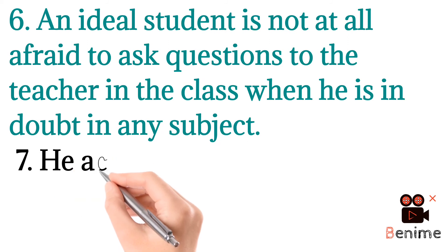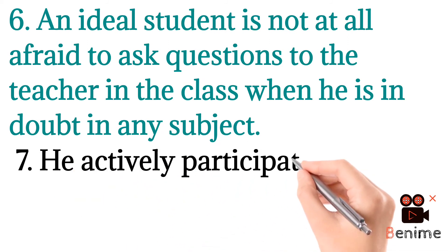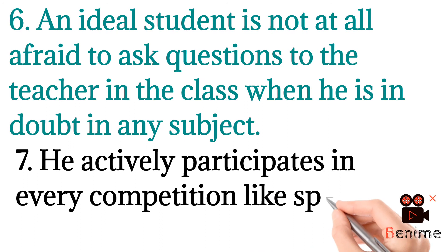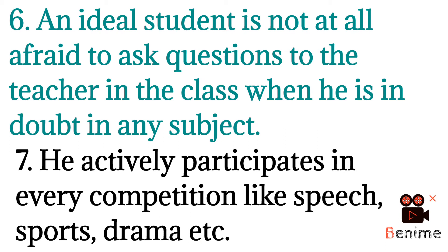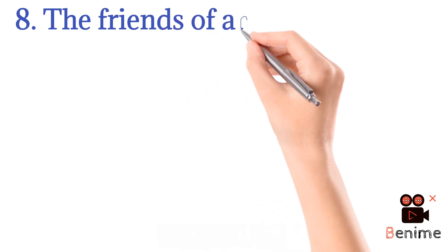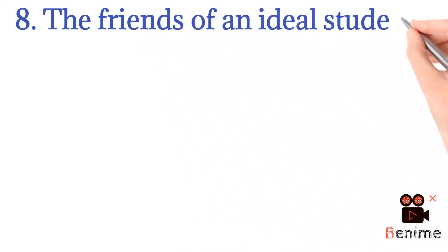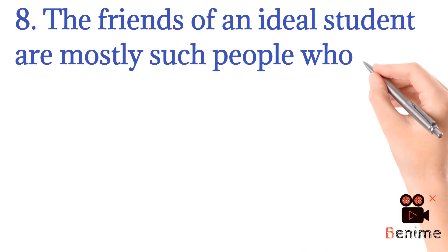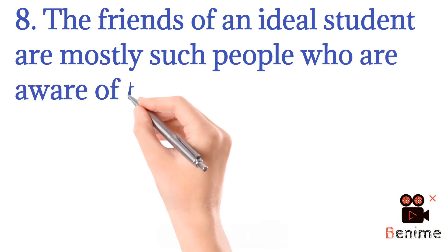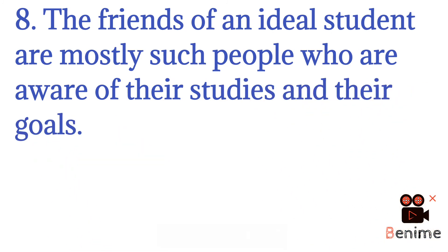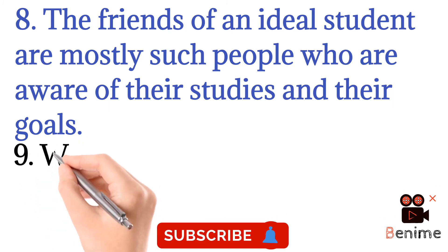Line number 7: He actively participates in every competition like speech, sports, drama, etc. Line number 8: The friends of an idle student are mostly such people who are aware of their studies and their goals.